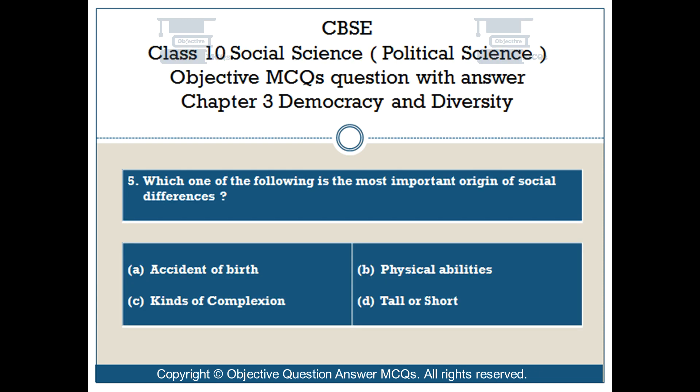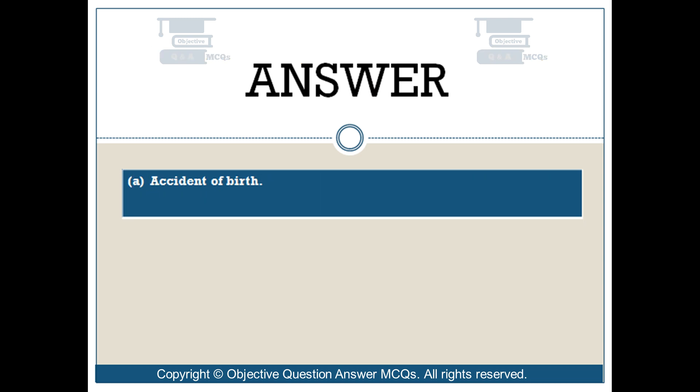Question number 5. Which one of the following is the most important origin of social differences? Option A: Accident of birth. Option B: Physical abilities. Option C: Kinds of complexion. Option D: Tall or short. The right answer is Option A — Accident of birth.